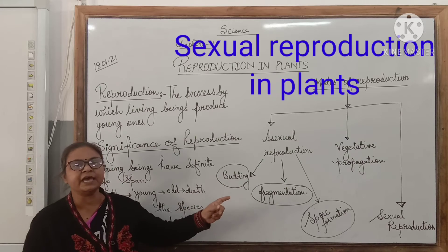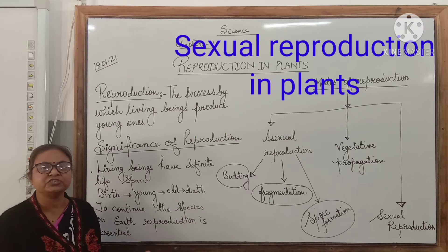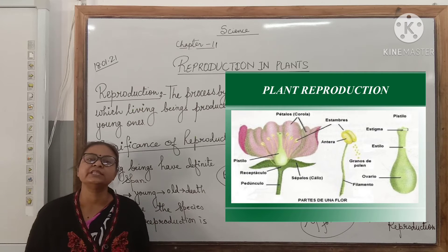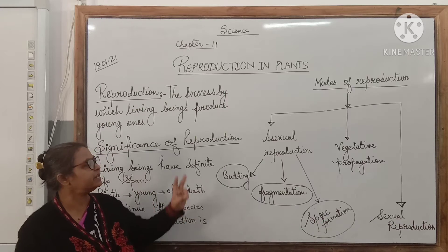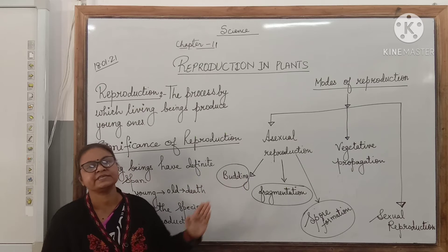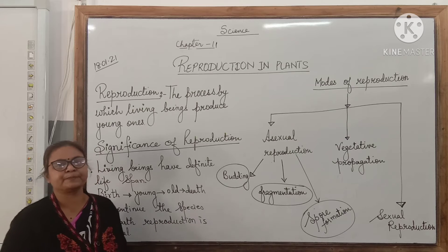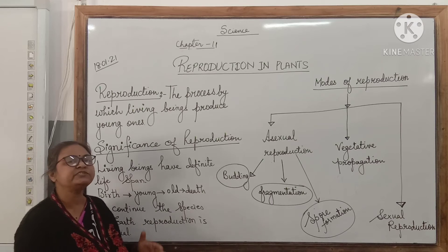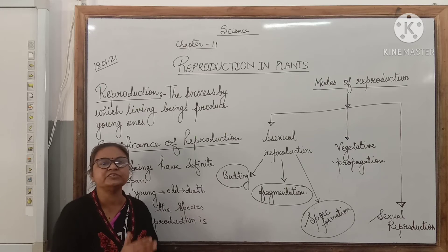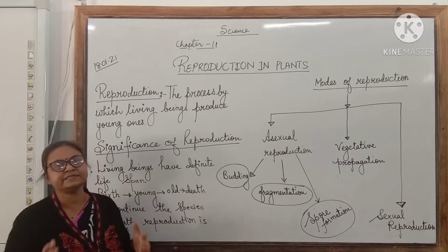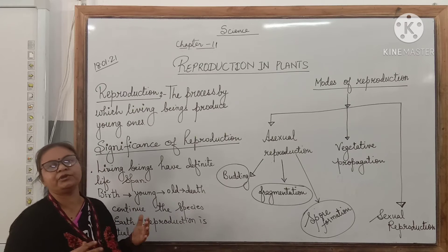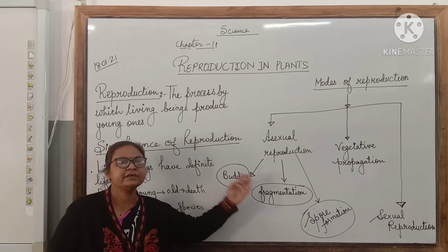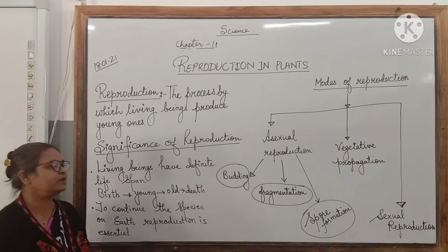The third type is sexual reproduction, in which seed and fruit formation takes place. In sexual reproduction, there is a need for two parents, whereas in asexual reproduction and vegetative propagation a single plant can reproduce. In sexual reproduction, you need a male gamete and a female gamete, which fuse to form a zygote, which later develops into the seed. This seed can be planted and will grow into a new plant. So these are the three types: asexual reproduction, vegetative propagation, and sexual reproduction.